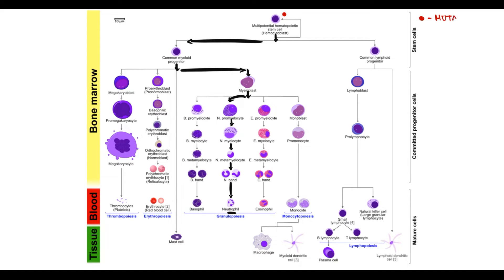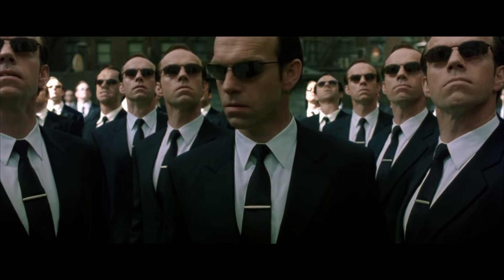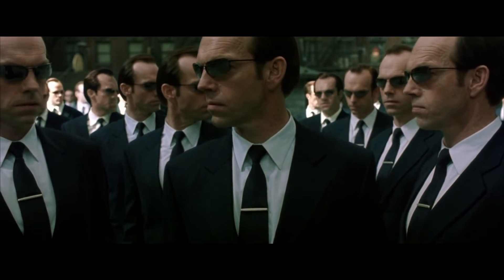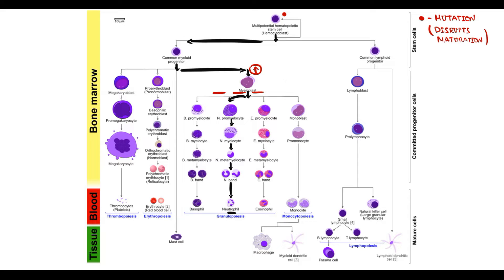If a mutation in the stem cell occurs that disrupts myeloblast maturation, myeloblasts cannot mature into promyelocytes. As a result, myeloblasts begin to accumulate inside the bone marrow. In normal conditions, myeloblasts comprise approximately 2% of bone marrow cells. In acute leukemia, because of mutation, myeloblasts progressively accumulate and the amount of blast cells exceeds 20%, and their quantity continues to increase. This increasing amount of myeloblasts is the first feature of acute myeloid leukemia.